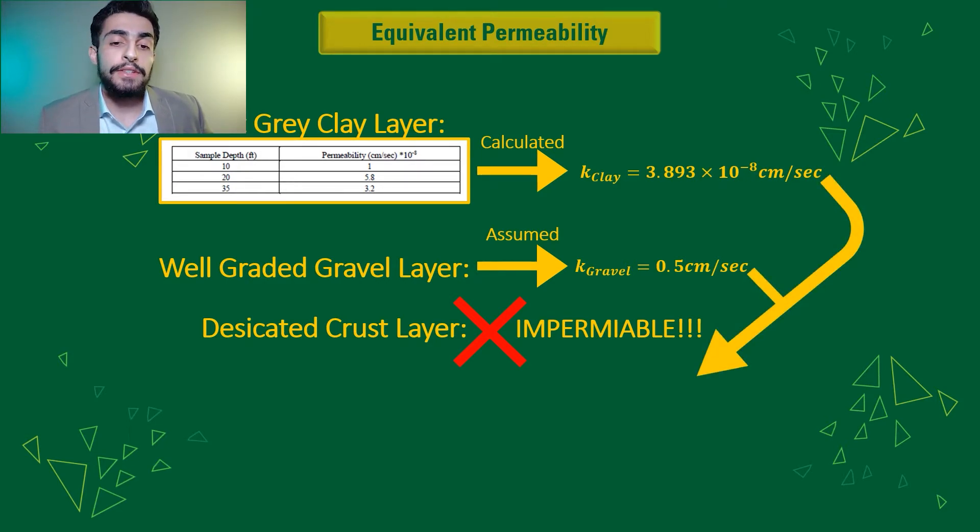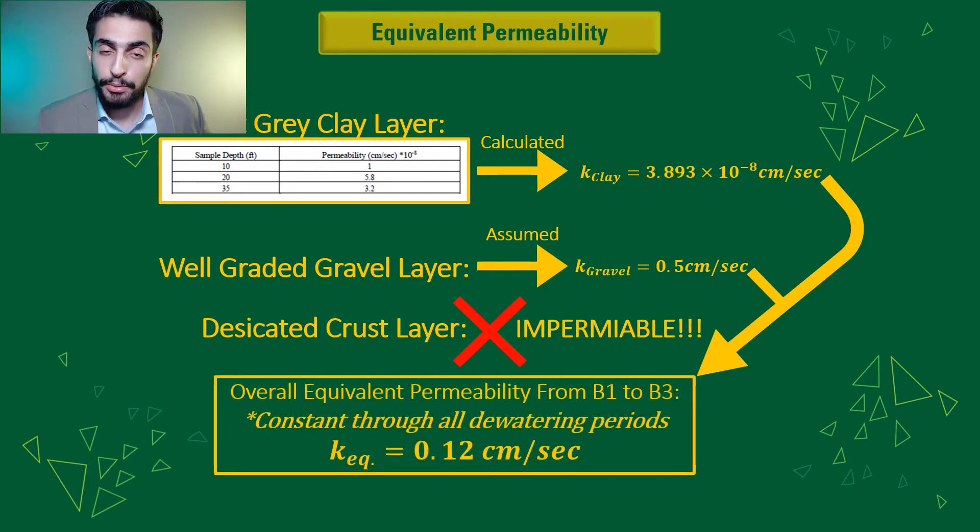So taking all these values and averaging them out between boring hole 1 to boring hole 3, we get an equivalent permeability of 0.12 centimeters per second.